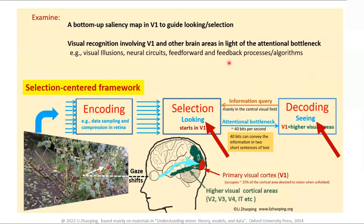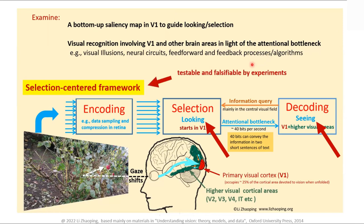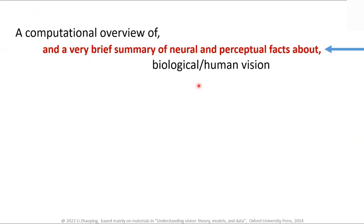Visual recognition involving V1 and afterwards — if you look at it this way, it has to be very different. Perhaps the previous approach did not look at it that way, and that was probably the difficulty. Can we then understand things like illusions, circuits, feedforward and feedback processes — especially feedback processes, which are much less intuitive? It has to be testable and falsifiable. So let's give the background: what do we know experimentally? With these facts, let's be scientists or engineers and understand them — not just remember as a list, but derive them intuitively and mathematically.